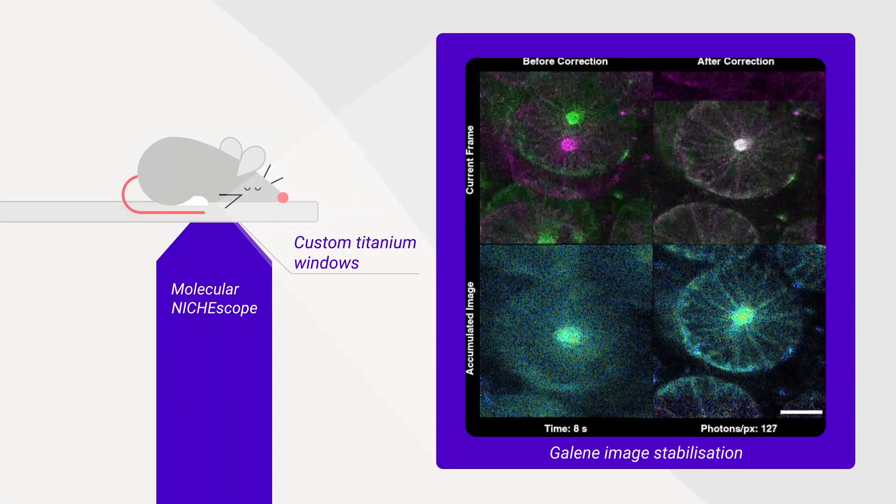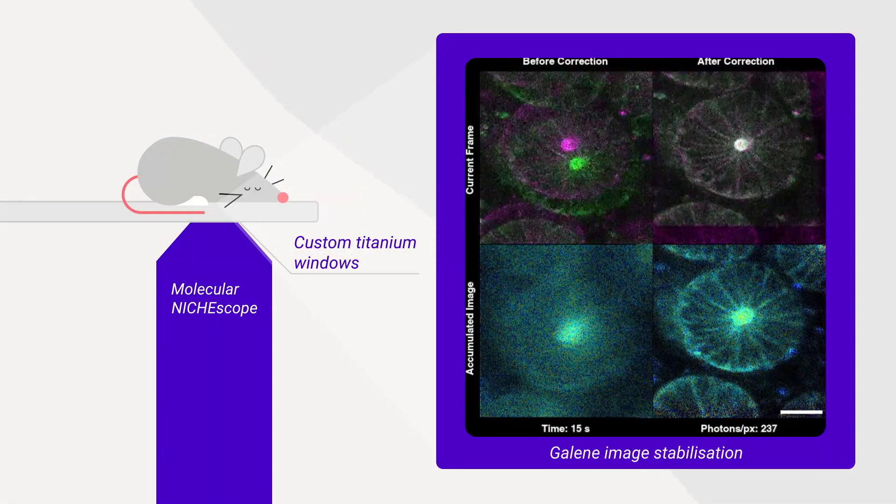The Molecular Neescope allows us to use titanium optical windows where we can look deep within the abdominal cavity. We can look, for example, in the live pancreas.